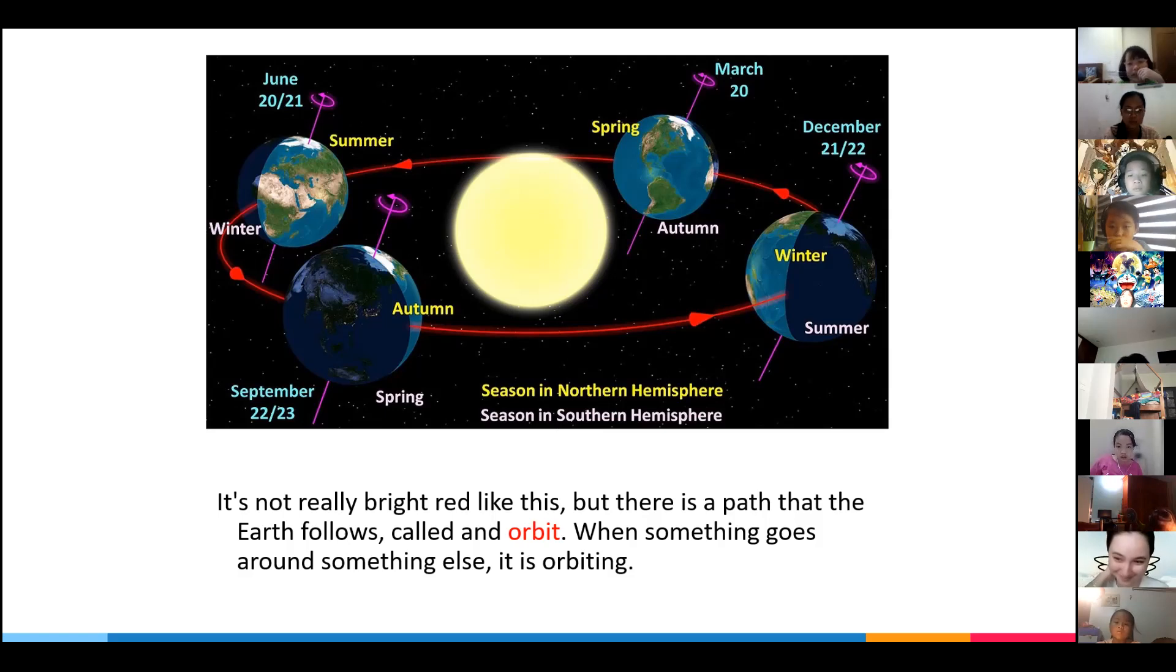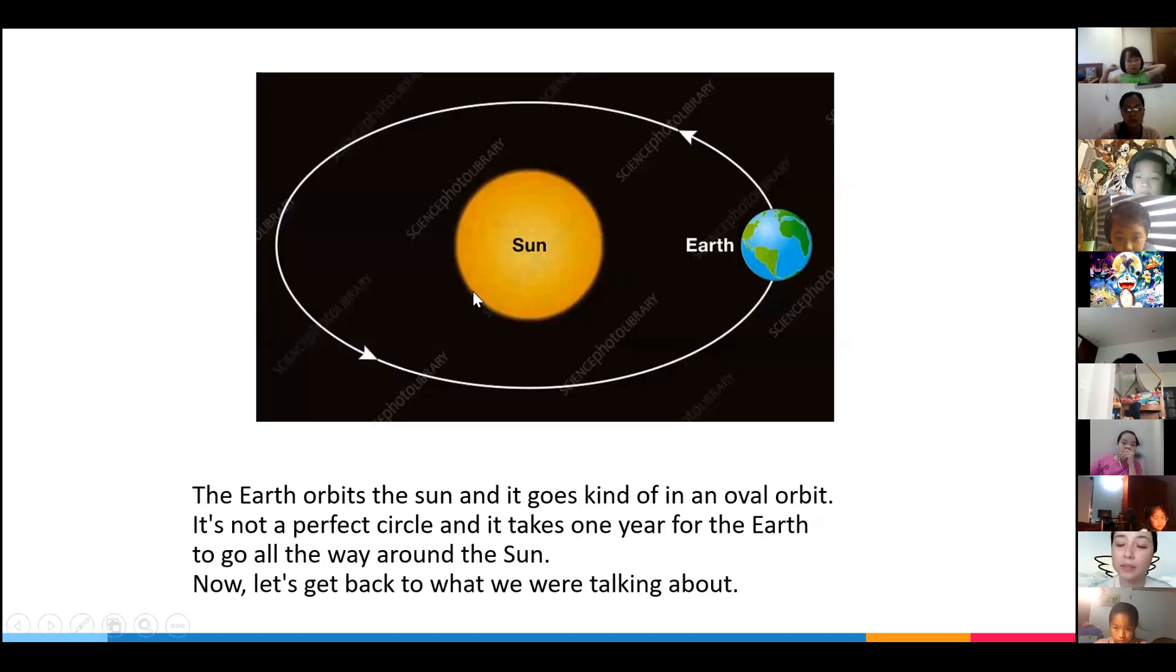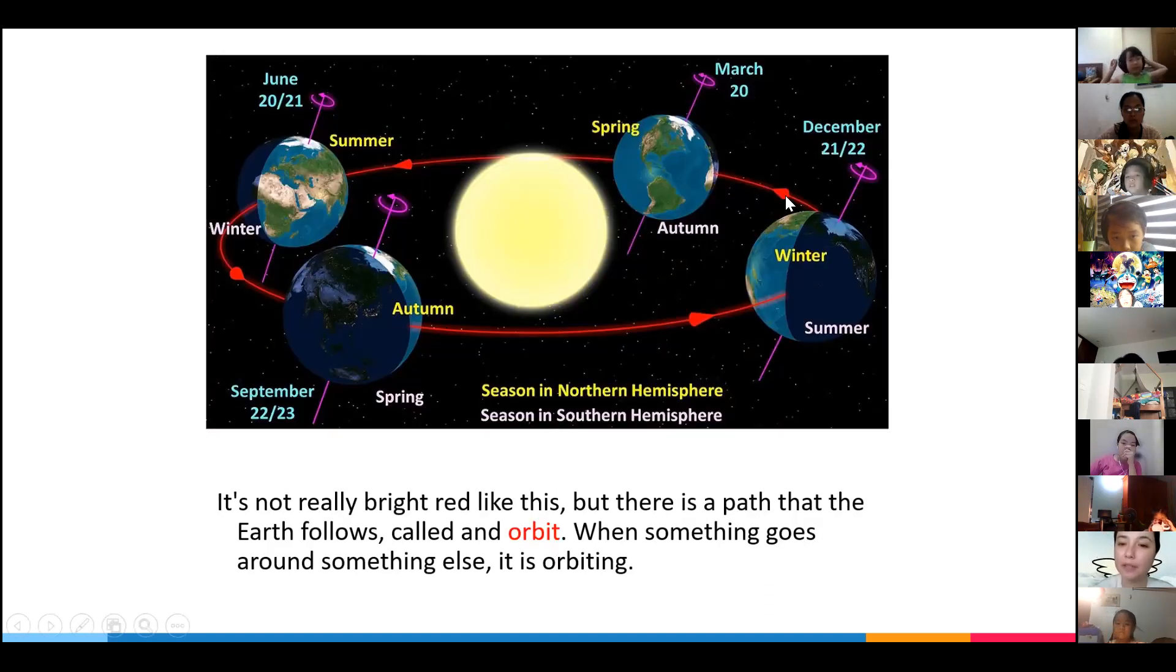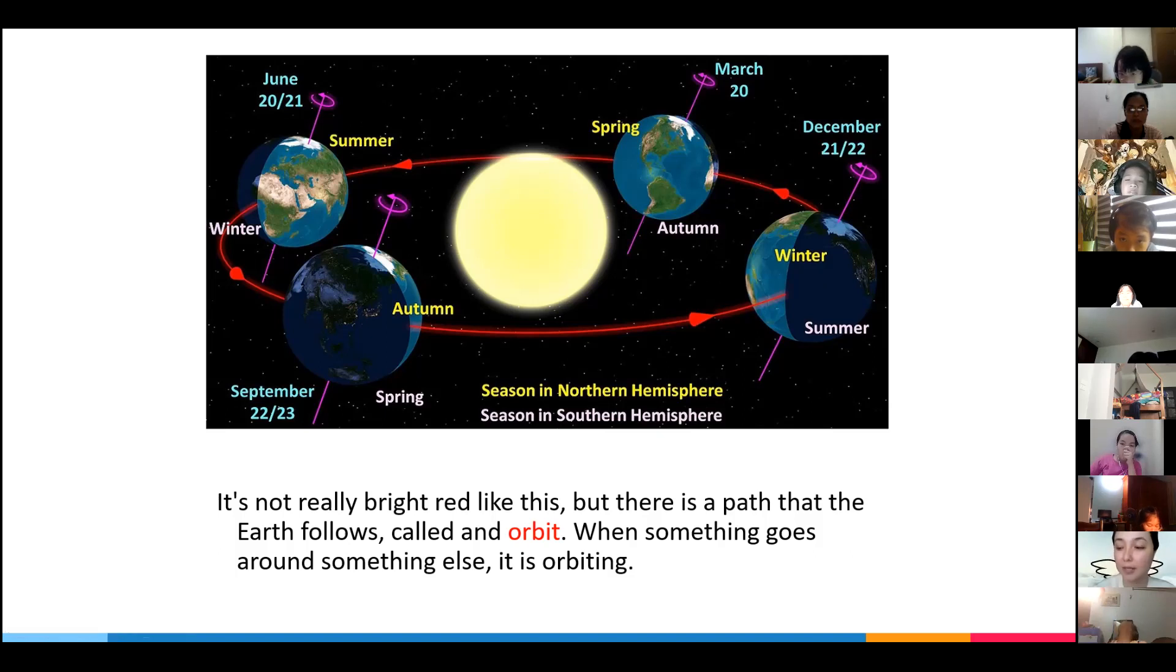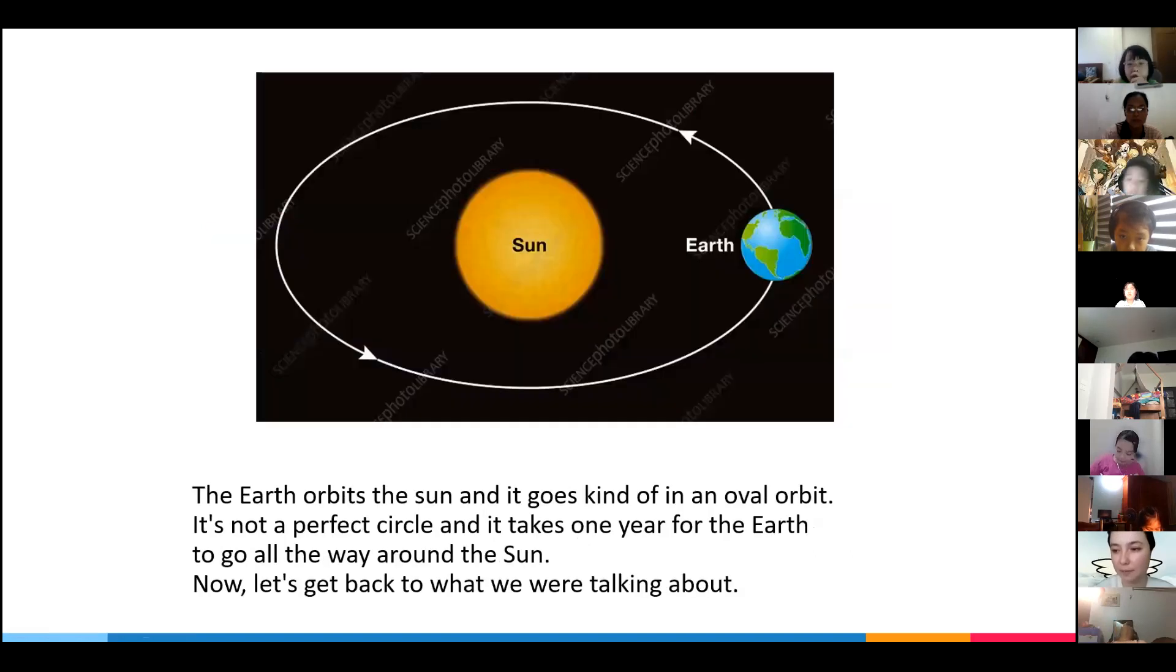What do we call the path that our planet follows around the Sun? The path, like the road—what did we call the path that our planet Earth follows around the Sun? It is called orbit, very good. It's called an orbit. So the Earth orbits around the Sun when it's going around something else. Very good.